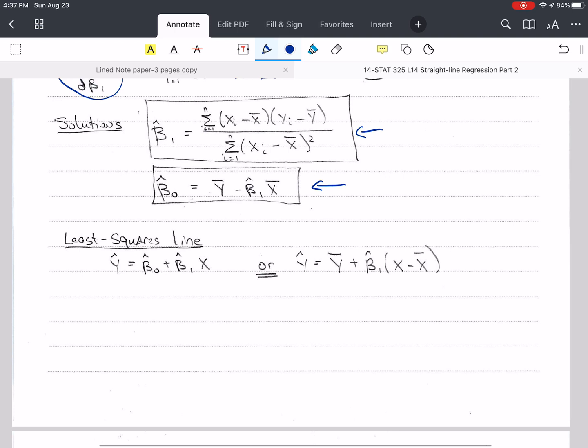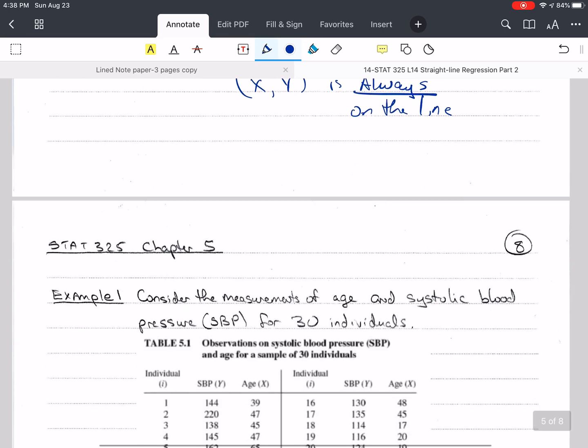And so we can write our least squares line using this form, or we can substitute in for beta 0 hat, and we get y hat is equal to y bar plus beta 1 hat times x minus x bar. Notice that the point x bar, y bar is always on the line. Always.